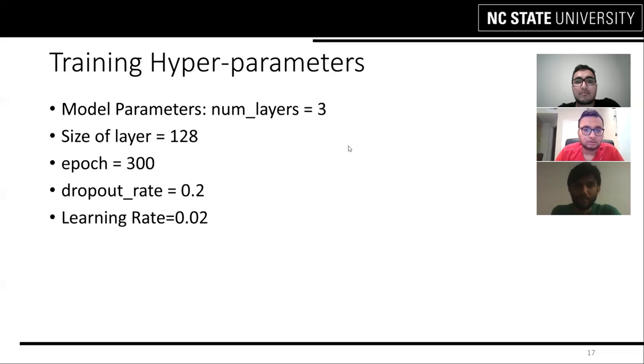These are the hyperparameters for us. We took three layers, each three layers stacked on the other with the length of the RNN is 128, we trained it for 300 epochs and learning rate was 0.02 and the dropout rate was 0.02.